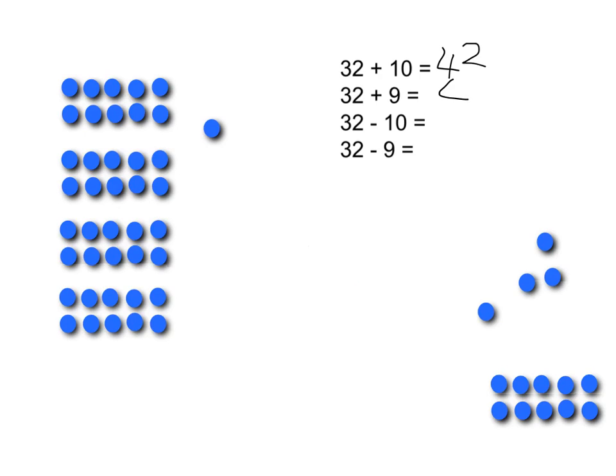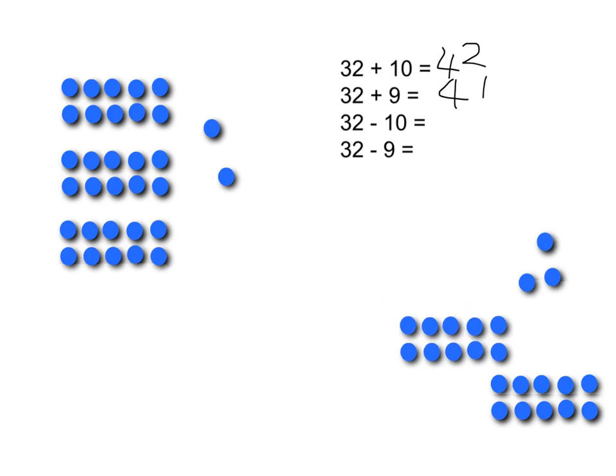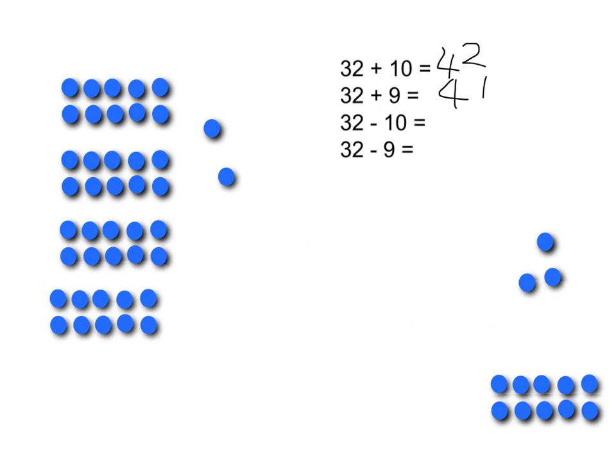And so what is your answer? It is 41. Because when I did 32 plus 9 what I said was I have 32. I'm going to give you 10 more that gets me to 42 but you've got to give me 1 back because I was only meant to give you 9 so it's 41.